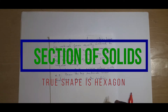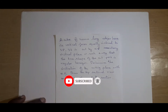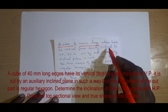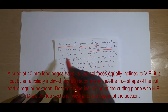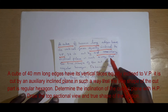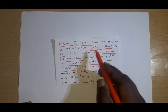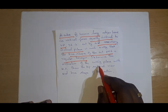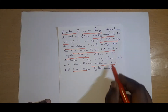Hello students. In this video we are going to see a typical projection of section problem. The question states: a cube with a 40mm long edge has its vertical faces equally inclined. It is cut by an auxiliary inclined plane such that the true shape is a regular hexagon. No cutting angle is given — only the 40mm dimension. We need to determine the inclination of the cutting plane with the HP, draw the sectional view, and draw the true shape of the section.